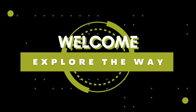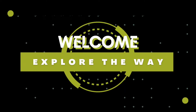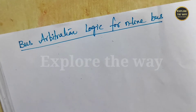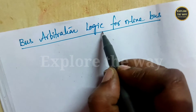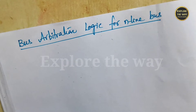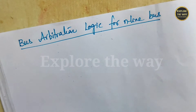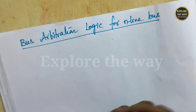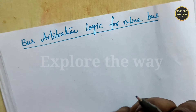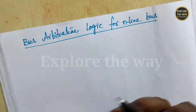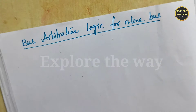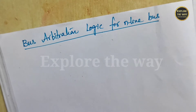Welcome to Explore the Way. In this video I am going to explain bus arbitration logic for an n-line bus. We are going to design a subsystem for bus arbitration logic. First of all, what is bus arbitration logic? In the situation when one or more devices are requesting for bus access, the bus master or the bus arbitration logic decides which input device will be given bus access. That logic is called bus arbitration logic.